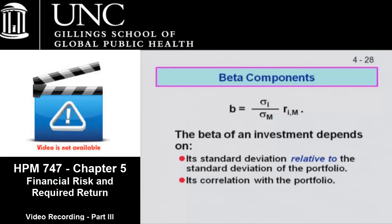Beta is dependent — just to understand what's going on here — on two things. Beta is equal to the standard deviation of the investment over the portfolio or the market, times the correlation between those two. So it's dependent on the relative amount of standard deviation and the correlation — the direction of change.